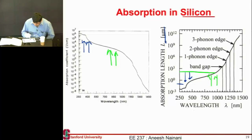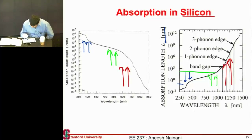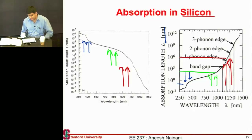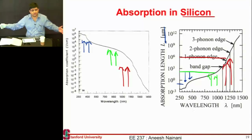But if I look at the red photons, which are somewhere close to the band gap of my cell, you see that these have an absorption length of 10 to the power 6 microns — or about a meter. So you would have to make a silicon cell a meter deep if you want to absorb photons very close to the band gap.